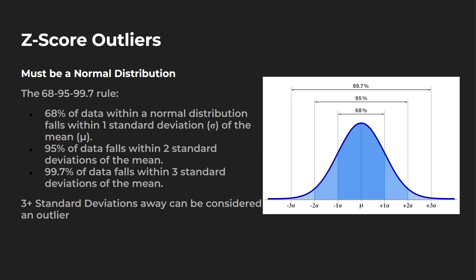Assuming that you have a normal distribution, about 50% on both sides of the mean: 68% of the values are going to be within one standard deviation, 95% within two standard deviations, and 99.7% within three standard deviations on both sides. So when you have a value that's over three standard deviations away, you can consider that as an outlier. I'll be showing you how we can detect outliers within data frames, label them as a new column, and also remove them through one of our examples.